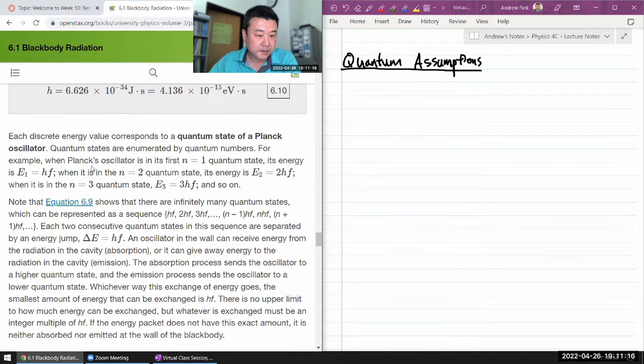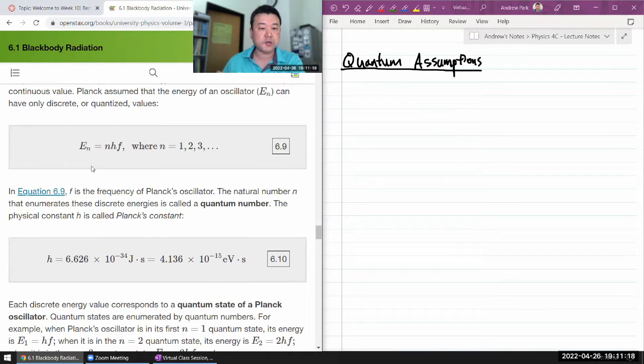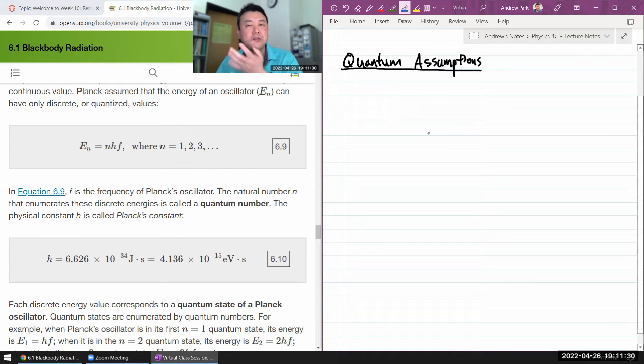He introduced this assumption that the energy of an oscillator can have only discrete quantized values. Let me write it in a slightly different way, which goes a little bit better with the format that Einstein used in his explanation of the photoelectric effect,